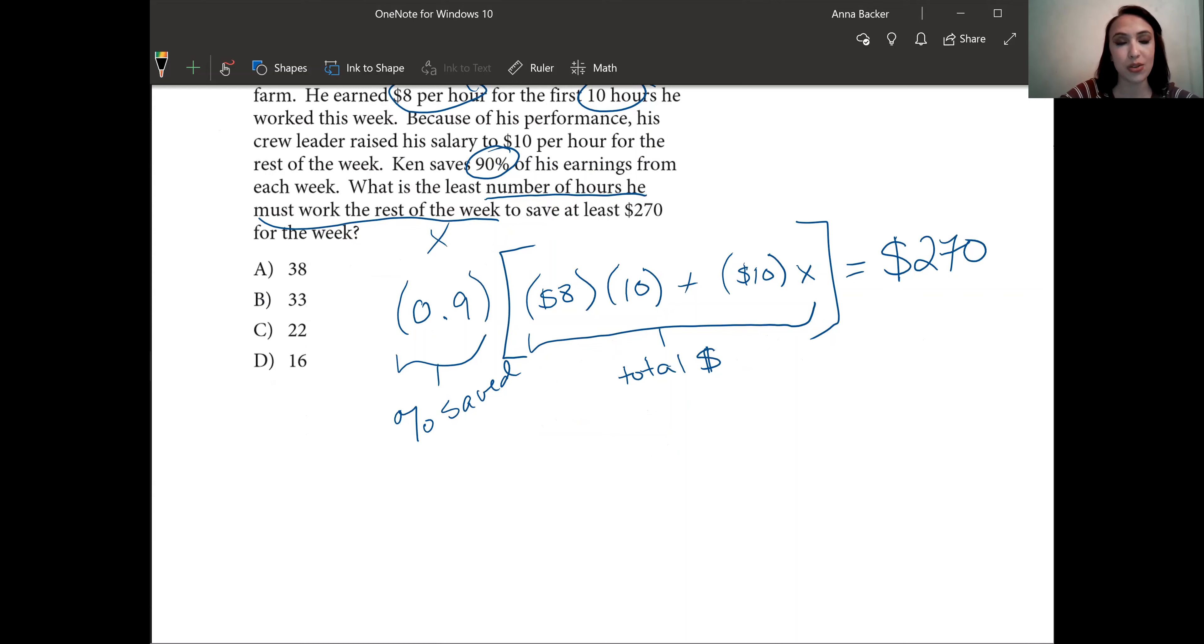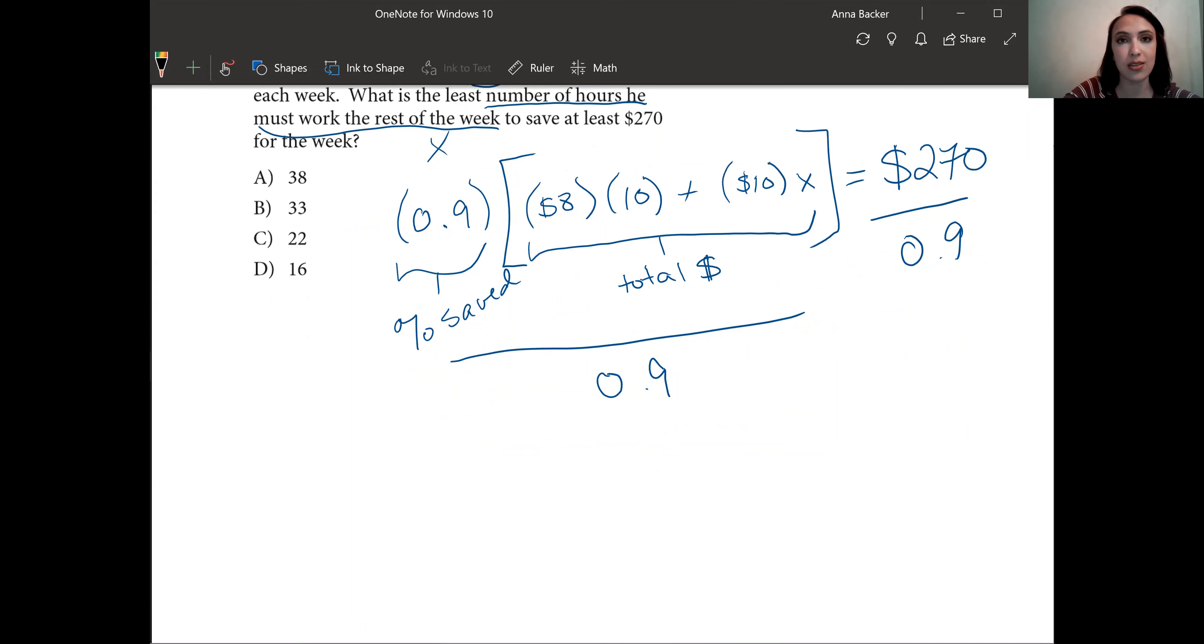First step is we're going to divide this all by 0.9 just to get rid of that part of our equation. I'm also going to take the step of doing $8 times 10, which is just going to simplify to $80. So 80 plus 10x equals 270 divided by 0.9, which is going to be the same as 300.